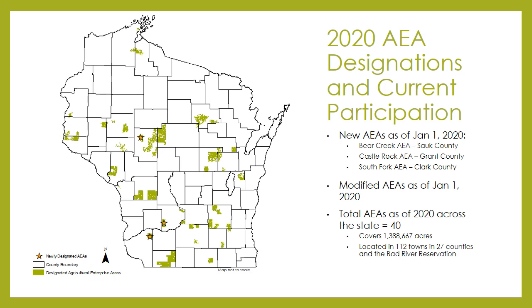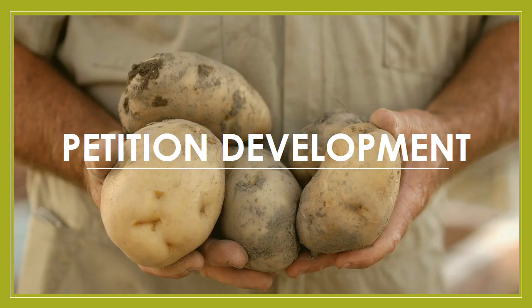Currently, Wisconsin law allows up to 2 million acres to be designated as agricultural enterprise areas. Now we will look at the 2020 updates to the AEA petition and we will go through the petition development process.